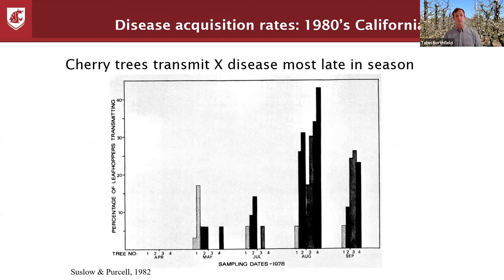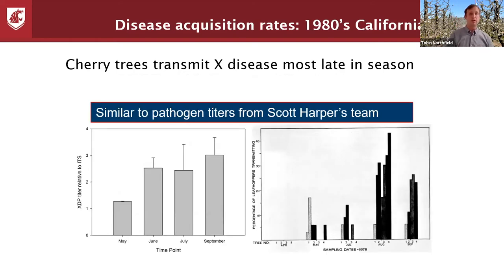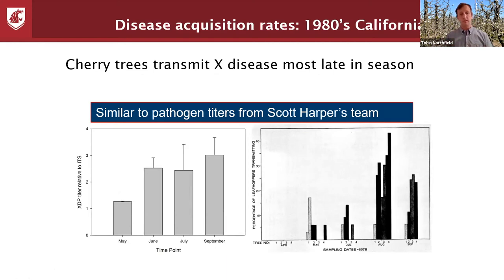In California in 1978, researchers took four trees, put leafhoppers on them, and tested whether the leafhopper could pick up the phytoplasma and pass it on to another plant. In April they weren't able to pick it up; in May they were starting to; and really in August and September they were most likely to acquire the phytoplasma. Scott Harper's group in Prosser later looked at X disease phytoplasma titers in the plant over time and found they increase later in the season, which is when leafhoppers are most likely to pick it up — confirming that post-harvest is the most critical and concerning time point.